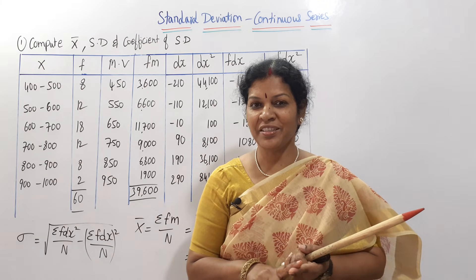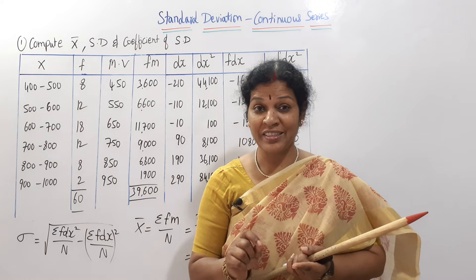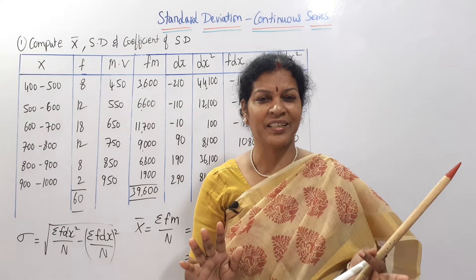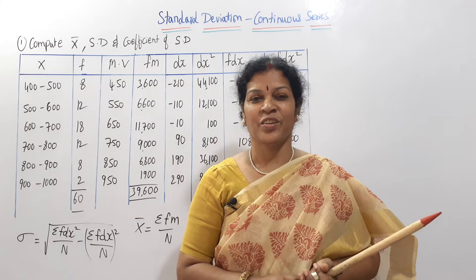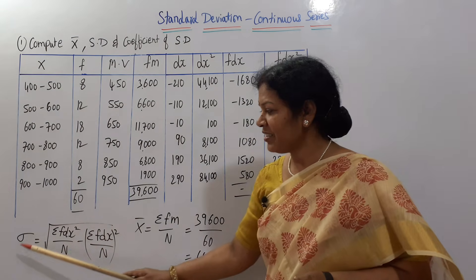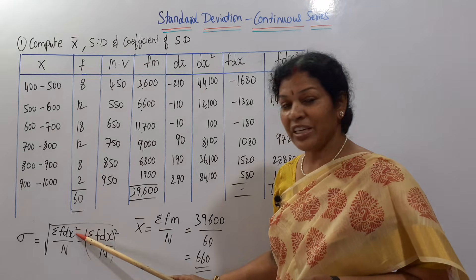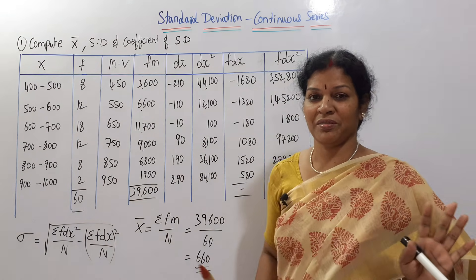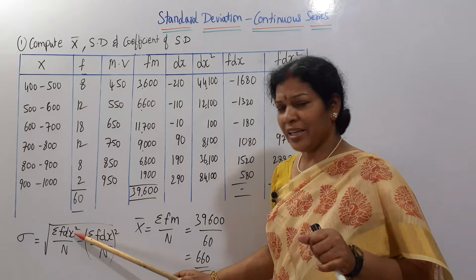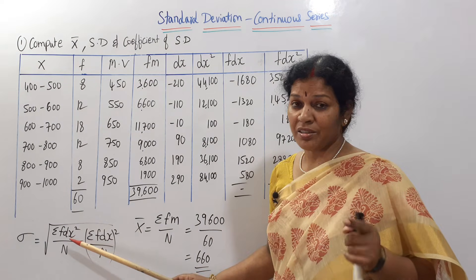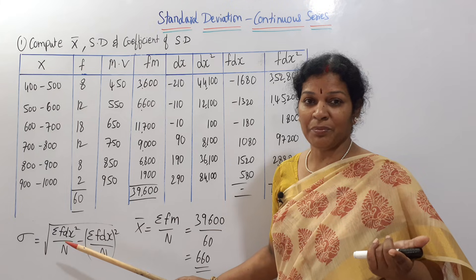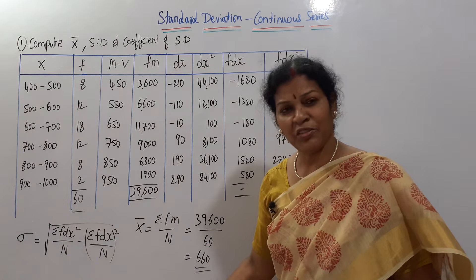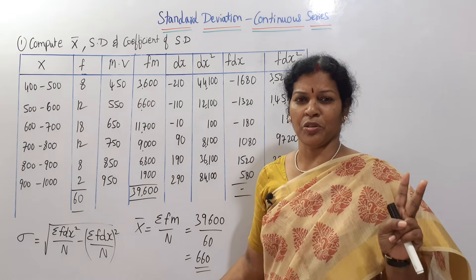Did you understand individual and discrete series? If yes, this is quite easy. The formula is also the same as the discrete series. Standard deviation is equal to root of sigma f dx squared by n minus sigma f dx by n whole squared. Some people use it as fd or fdx — doesn't matter, the formula is the same for both discrete and continuous series.